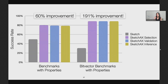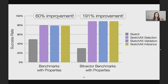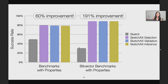The success rate of baseline Sketch for these benchmarks is only about 50%, and we are able to raise it to 80% with our notion of property-guided synthesis. And if we focus on the bit vector benchmarks, which Sketch was originally designed for, the improvement becomes even more dramatic: the success rate of baseline Sketch was only 30%, and we were able to improve this by 192%.